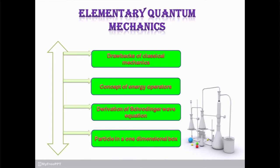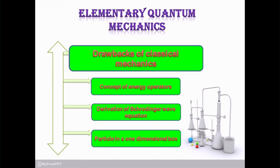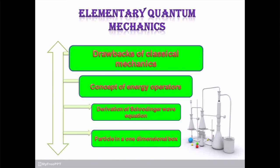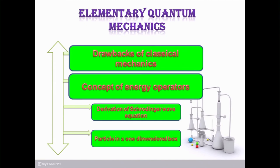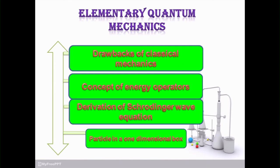In elementary quantum mechanics, it is totally related to the classical mechanics and quantum mechanics. So first part is there that is called drawback of classical mechanics, concept of energy operator, derivation of Schrodinger wave equation and particle in one dimension box.